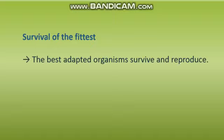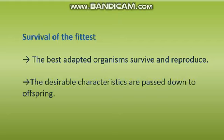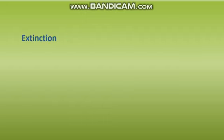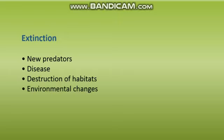Natural selection is known as survival of the fittest, and this plays an important role in evolution. It is essentially the process in which the best adapted organisms are able to survive and reproduce. Desirable characteristics are passed down from parents to offspring, so advantageous alleles are passed on. Species that are not adapted will be at risk of becoming extinct, which can occur due to new predators, disease, destruction of habitats, change in the environment, or increased competition for resources.